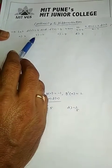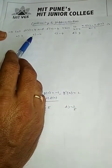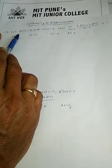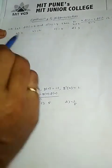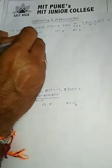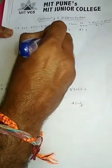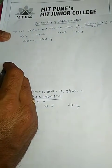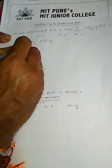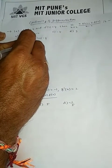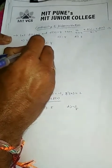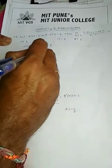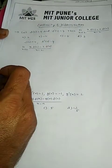Now we are going to discuss continuity and differentiation — some JEE/IIT questions. Let f(2) = 4 and f'(2) = 4. Then find the limit as x approaches 2 of [x·f(2) - 2·f(x)] divided by (x - 2).